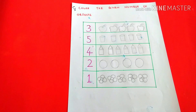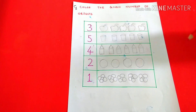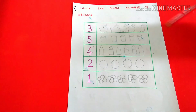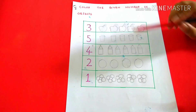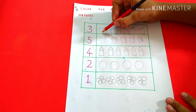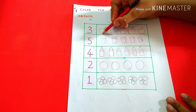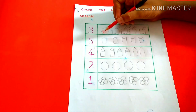Color the given number of objects. 3 apples. 1, 2, 3. 3 apples.